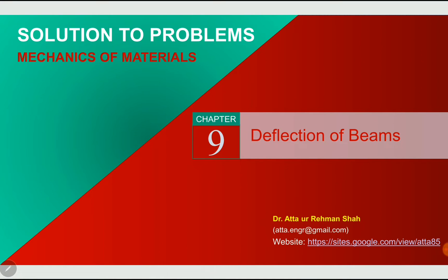We are going to discuss solutions to some selected problems from Chapter 9 of Mechanics of Materials by F.P. Beer and Johnston. The title of the chapter is Deflection of Beams. I will solve some numerical problems from the exercise, applying the solution methods we discussed in the theory part. We will discuss almost five problems in this lecture; the rest can be attempted by students, who can discuss difficulties via email or Google Classroom.